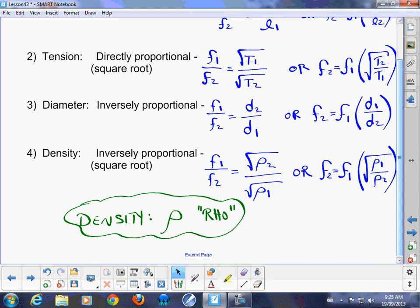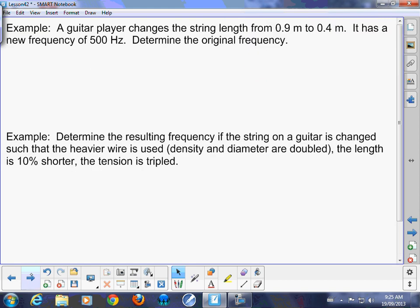So moving on. Two final examples. The guitar player changes the string length from 0.9 meters to 0.4, so they've placed their finger on there. The new frequency is 500 hertz. Determine the original frequency. It doesn't matter what form of the formula you use. You'll know from your formula sheet that f1 over f2 is equal to l2 over l1.